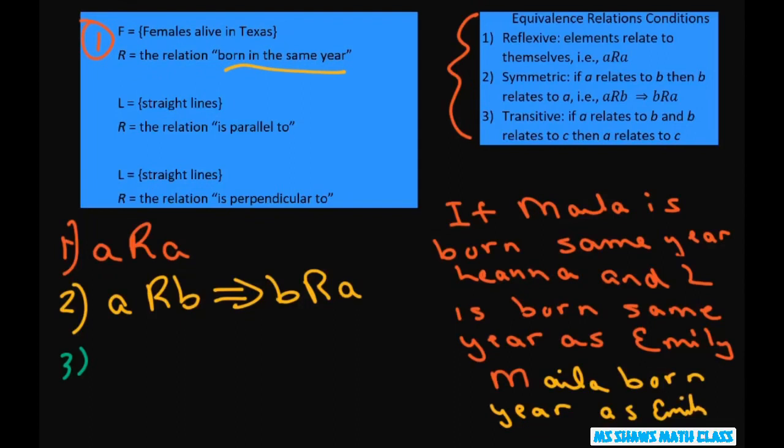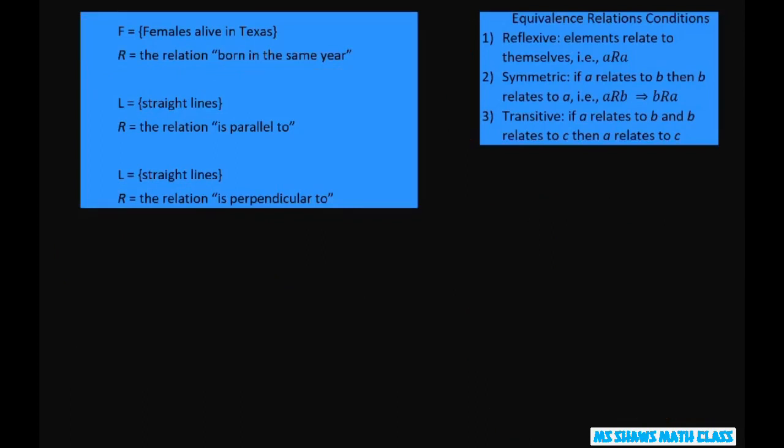All right. So if A relates to B and B relates to C, then A relates to C. All right. Next example, straight lines.